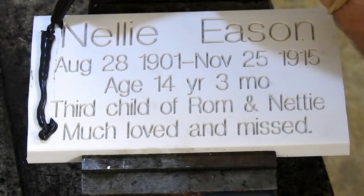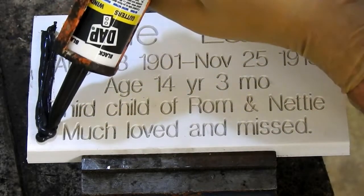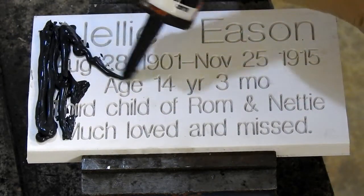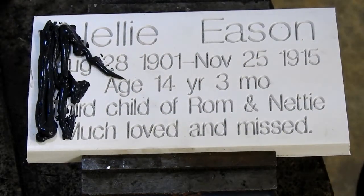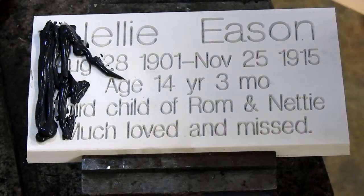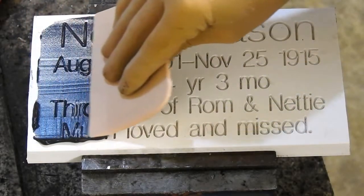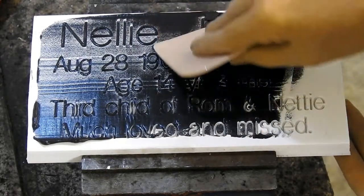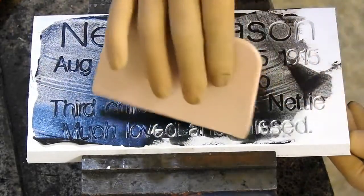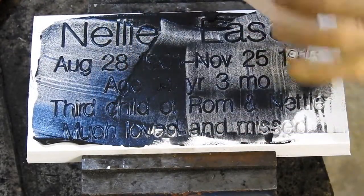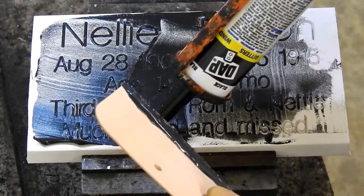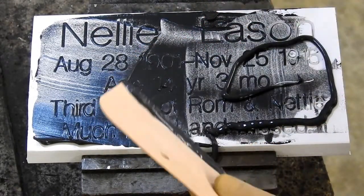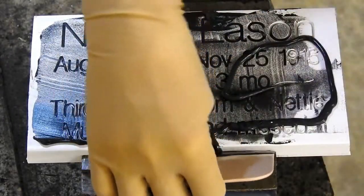With the routing complete, next I'll use black silicone and apply it to the surface of the plate. I'm using an applicator to force the silicone into the letters. The plate has a slick side, which is the back side of the board, and a textured side, which is the front side of the board. This plate is routed on the textured side, and is more difficult to clean than the slick side.